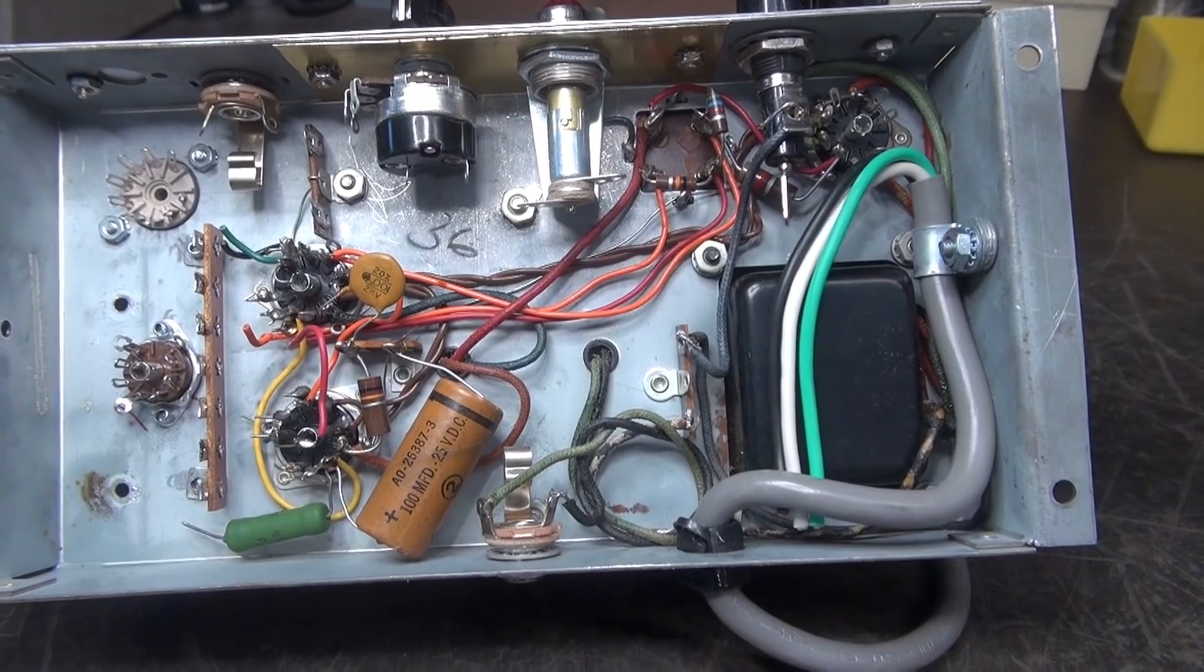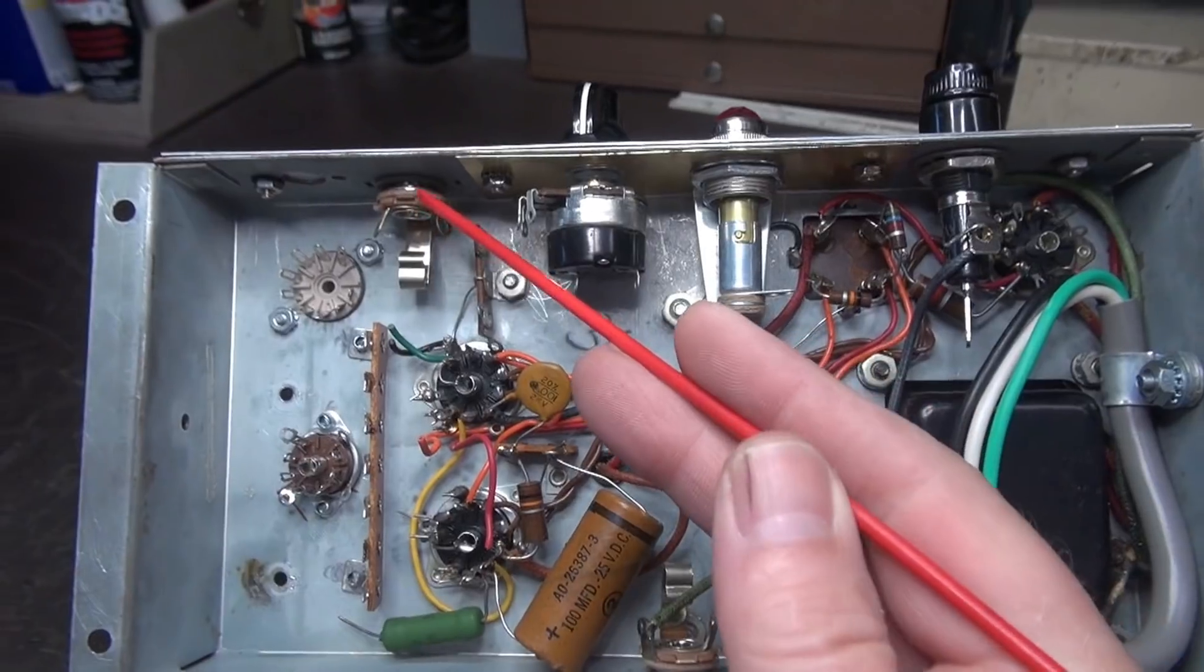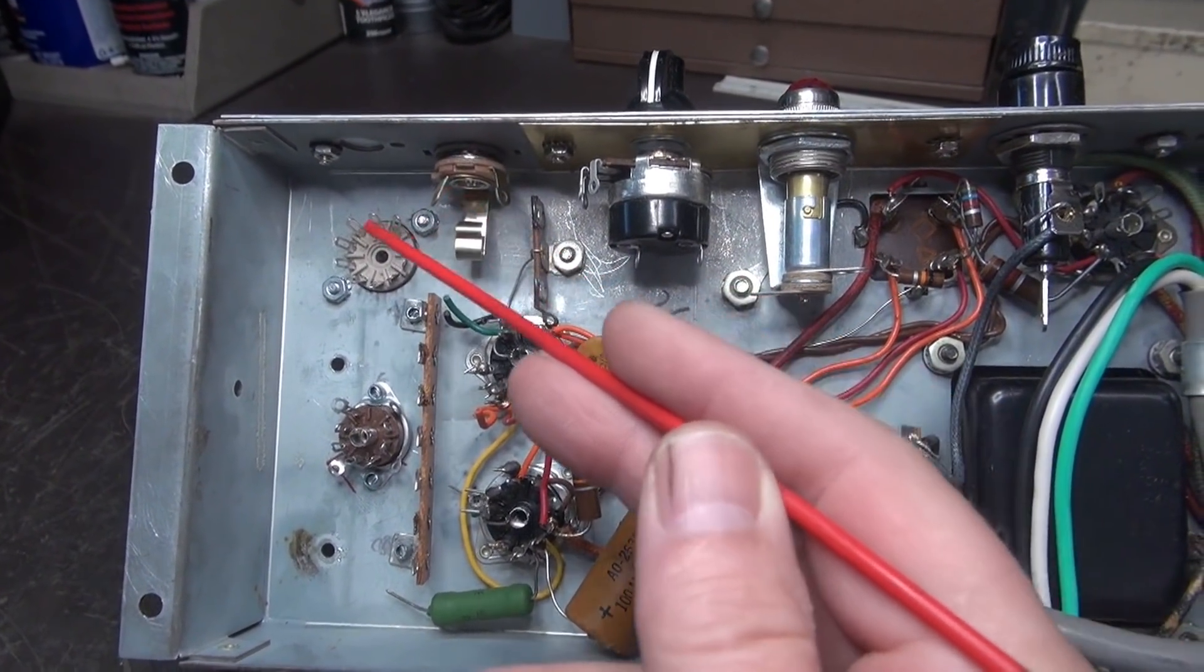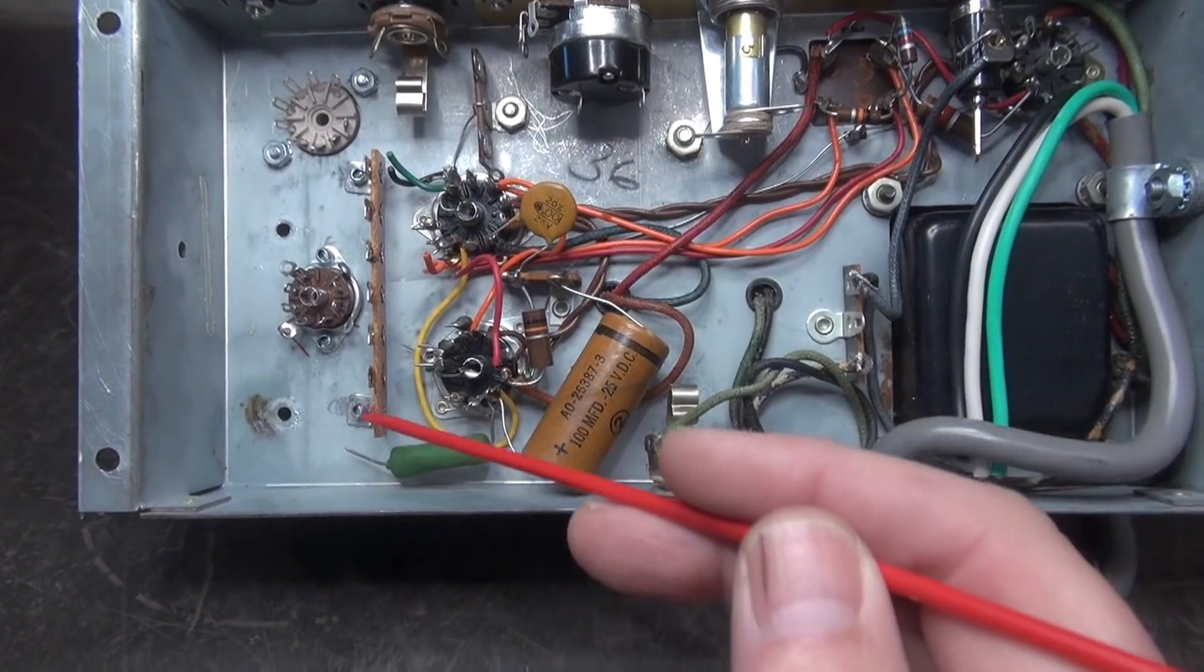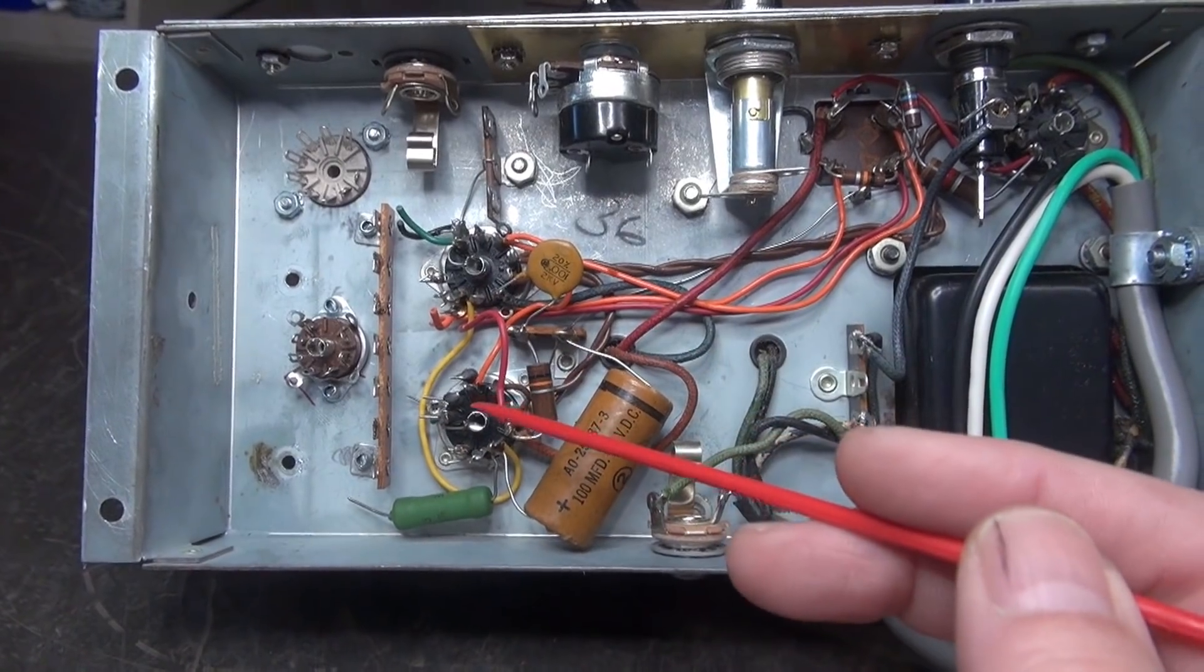On the bottom side, you can see a lot of the work is already done for me. Got the speaker output here. This will be our input jack, which will go direct to the 12AX7. Kind of nice there. I added this terminal board for the wiring between the 12AX7 inverter and the output tubes.